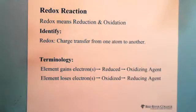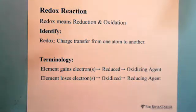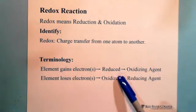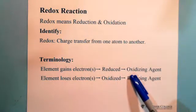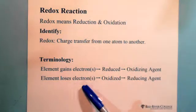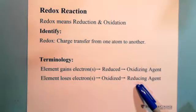Because charge transfers from one atom, that means one atom loses electrons and the other element gains electrons. The element that gains electrons — we call it reduced. The element that loses electrons is oxidized.